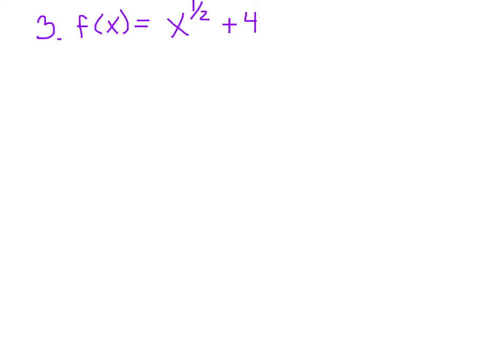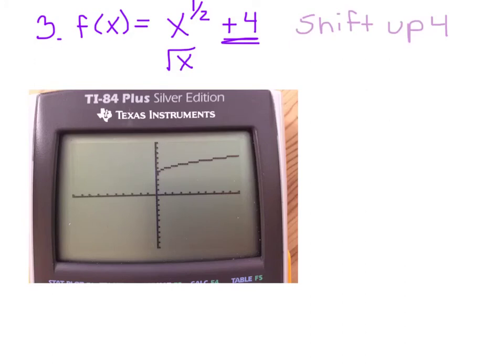Our next example: f(x) equals x to the 1/2 power plus 4. Remember, the 1/2 power is the exact same thing as the square root of x — you can punch in square root of x or use the caret with 1/2 and get the same graph. Looking at this, I don't have a negative, no stretch or shrink, no horizontal shift — all I have is a vertical shift of 4. Each home base point just moves up 4 units, so we add 4 to all y values.